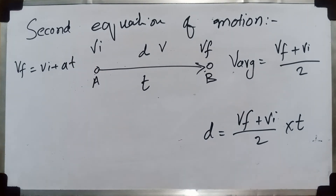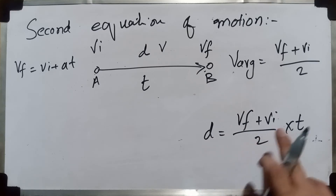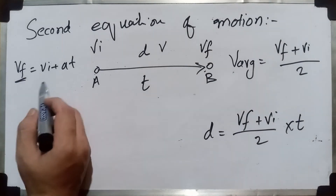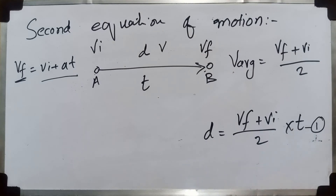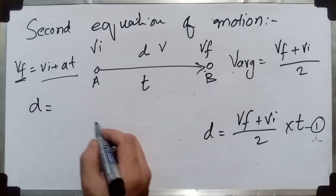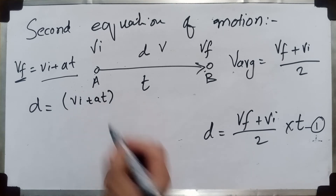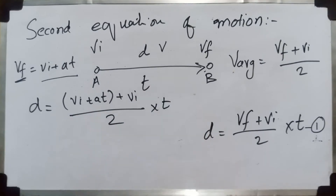We do this because in some problems we don't know the final velocity. We want to find distance using only the initial velocity and acceleration. After substituting the final velocity into the average velocity expression, we put the substituted value in parentheses. Initial velocity remains in its standard place, and the expression is converted into the new combined form.